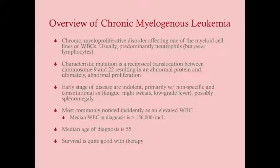Normally, the white blood cell count is around 7,000 to 11,000 per microliter. In patients with CML, it is very elevated — the median white blood cell count at diagnosis is greater than 150,000 per microliter. This elevated count is what really points toward CML, rather than the symptoms, which is unlike acute leukemia where symptoms are much more dramatic.